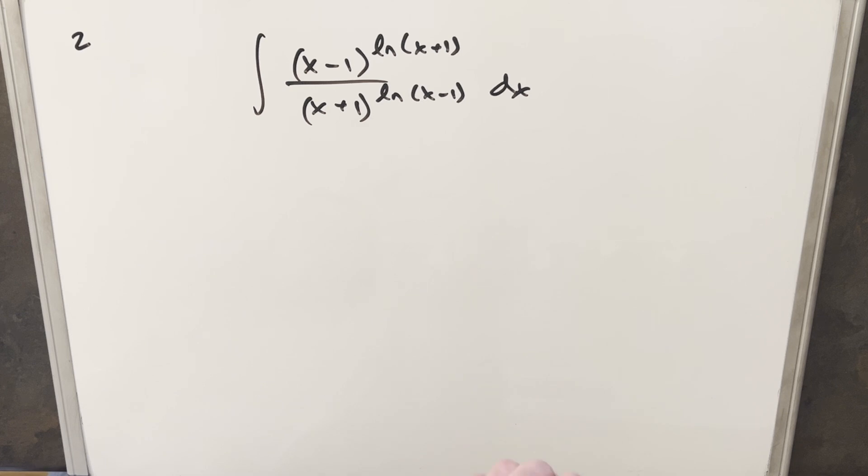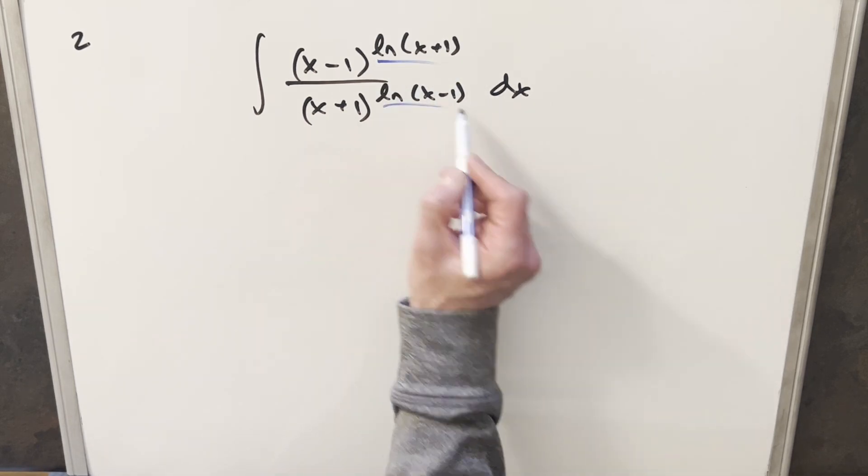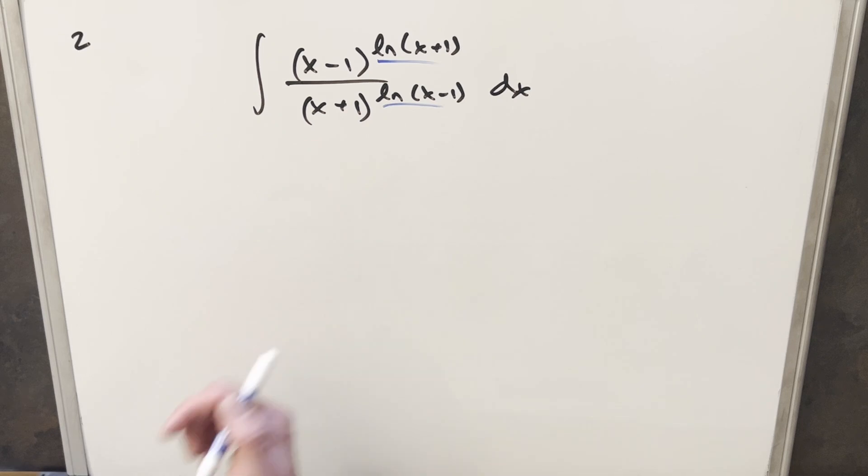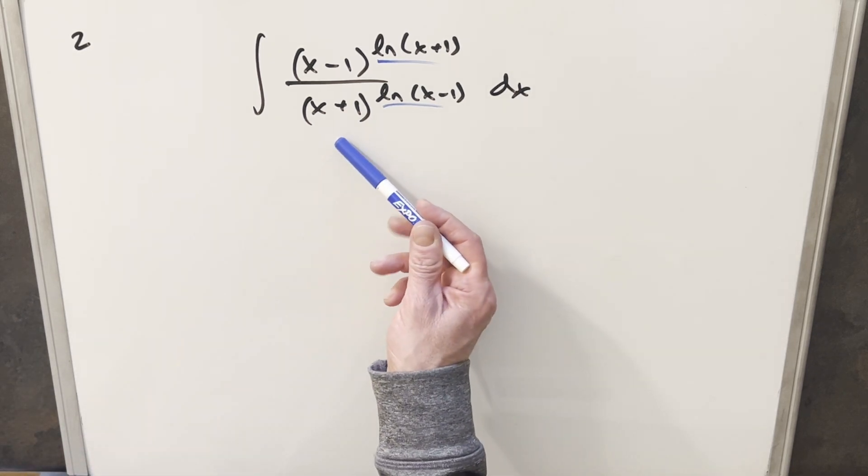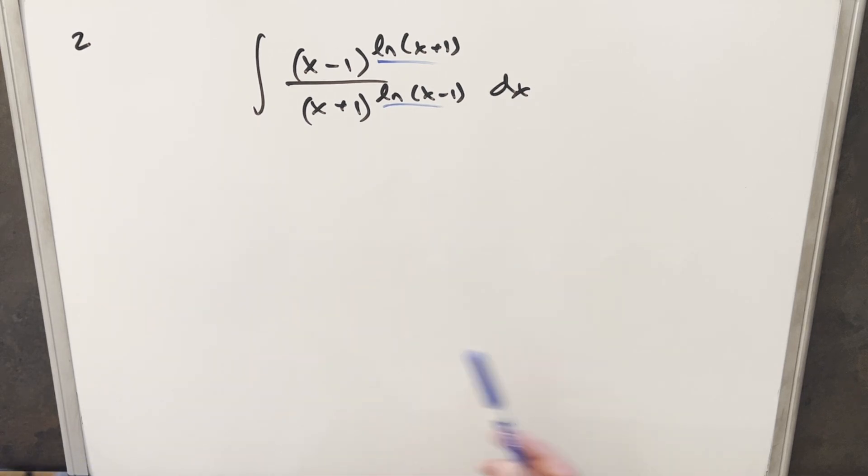At first I really had no idea where to start with this because I can't see a good u-substitution. It's hard to see how regular integration techniques are going to work on this. Having ln(x-1) in the exponent seems problematic. So the only thing I really came up with is that we somehow need to use algebra to manipulate this into something we can work with.